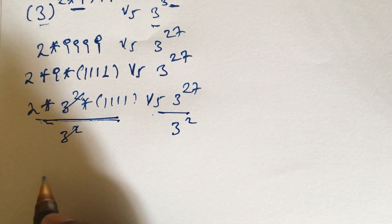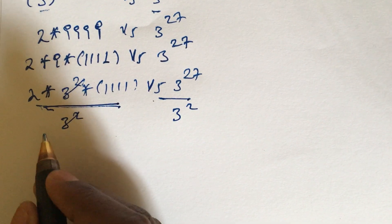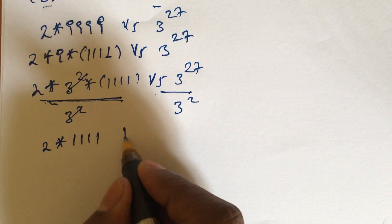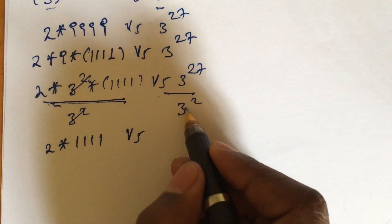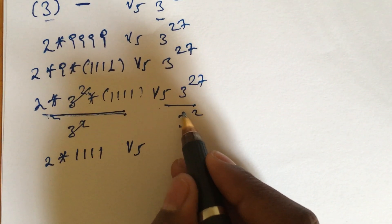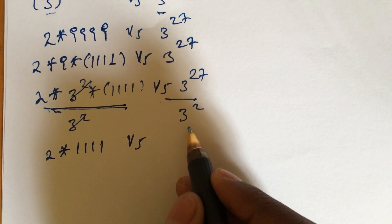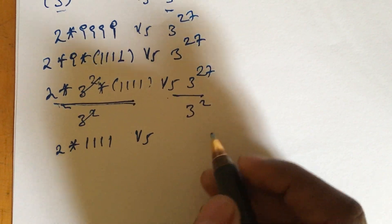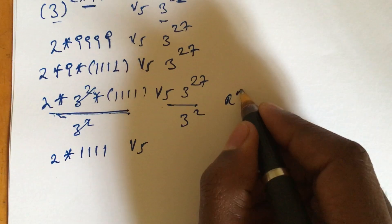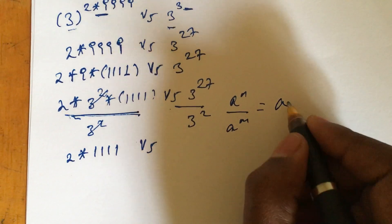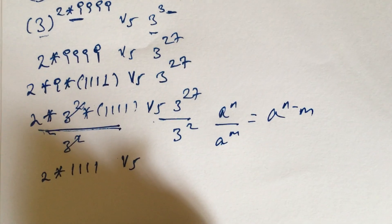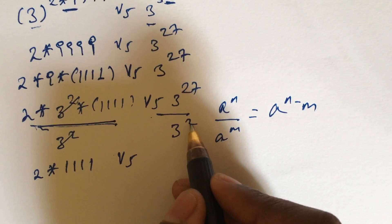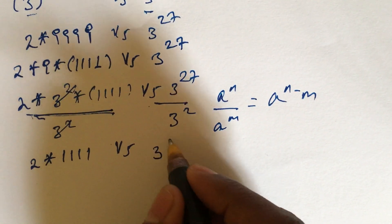After dividing, we apply the formula: a to the power of n over a to the power of m equals a to the power of n minus m. So 3 to the power of 27 divided by 3 squared gives 3 to the power of 27 minus 2, which equals 3 to the power of 25.